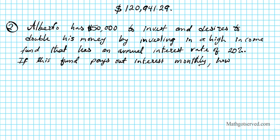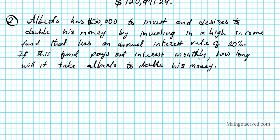...how long will it take Alberto to double his money? And this is assuming that he compounds his interest. He doesn't take anything out. That's the assumption here. So Alberto reinvests all interest. Basically compounding the interest.